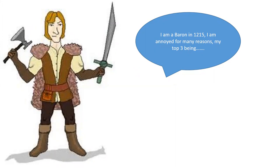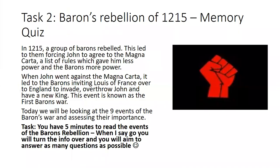Pause the video and spend five minutes on this task. In 1215, a group of barons rebelled — rebelled means you go against authority. This led to them forcing John to agree to the Magna Carta, which was a list of rules giving him less power and the barons more. When John went against the Magna Carta, it led to the barons inviting Louis of France over to England to invade, overthrow John, and install a new king — this was the First Barons' War.